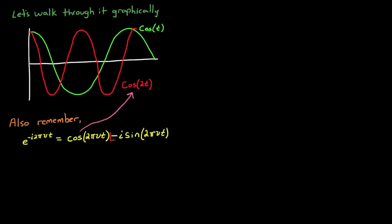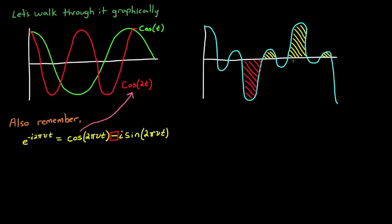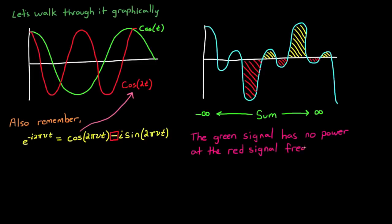So here I'll try to draw out the result of cosine of t times cosine of 2t, but you can multiply these examples out on your own to check it out. What you'll find is there's a beat frequency between the two, a repeating pattern, that will always be exactly the same amount of positive signal as there is negative signal. And the sum, as the limit approaches infinity, approaches 0. Another way of saying this is that the green signal, cosine of t, has no power at the frequency of the red signal, cosine of 2t. So let's move to the next example.